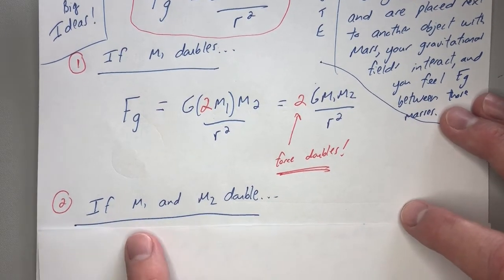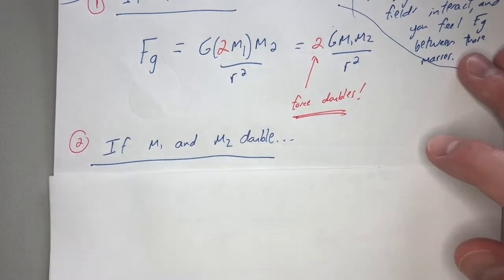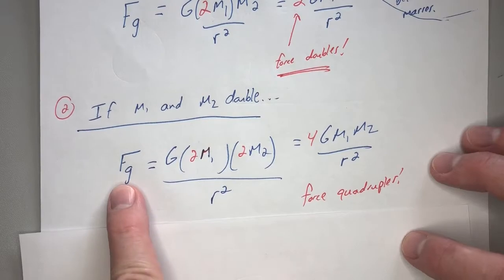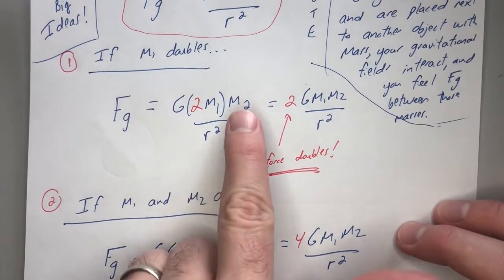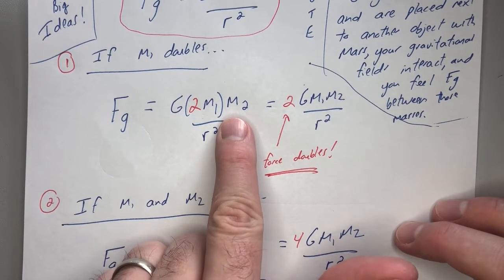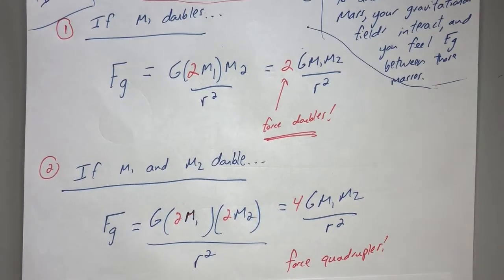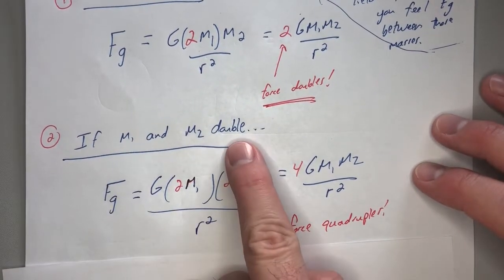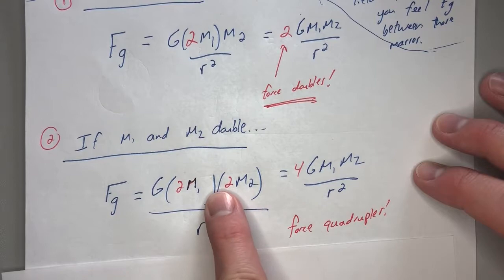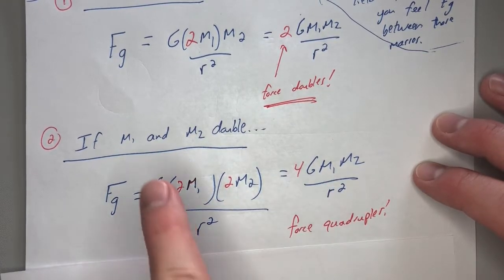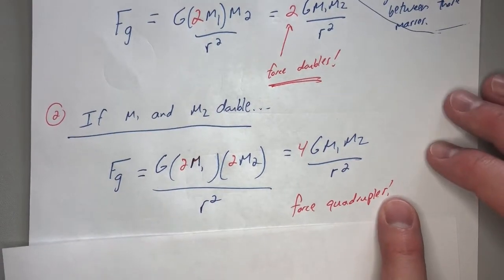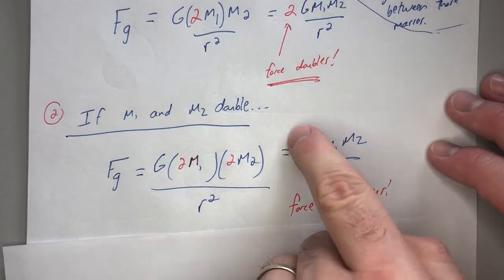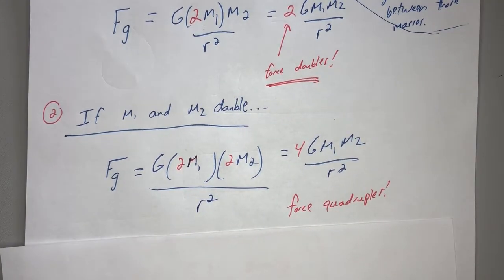What if both mass one and mass two double? Force gravity equals big G times 2M1 times 2M2 over r squared. Two times two gives a factor of four. So if you double the mass of each object, the force quadruples. That makes sense: you're doubling one mass, making the gravitational pull stronger, then doubling the other mass, making it stronger again — so four times the force.